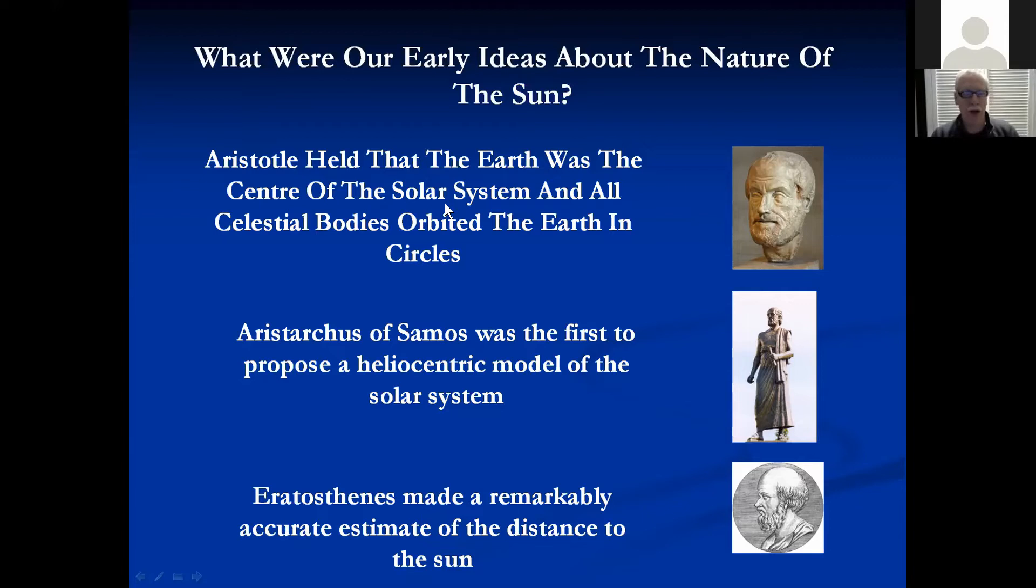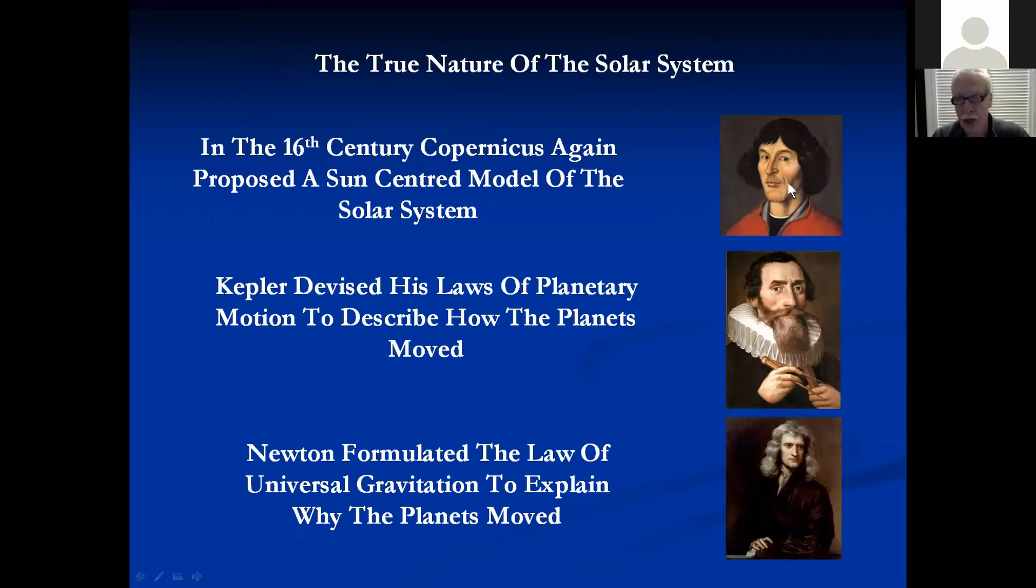This other Greek chap here, Eratosthenes, who was a very remarkable geometer. He managed to measure very accurately the size of the Earth using a well and some Roman marching signs. And he also made a fairly, a remarkably accurate estimate of the distance to the sun. And Aristotle held that the Earth was the center of the solar system. That was his take on it, and also that all celestial bodies orbited the Earth in circles, in perfect circles. Unfortunately, science was held back to a great extent by Aristotle's theories, which became over time enmeshed with the dogma of the church. And as a result of which Western science didn't really get a handle on the solar system until the end of the Middle Ages, indeed the beginning of the Renaissance.